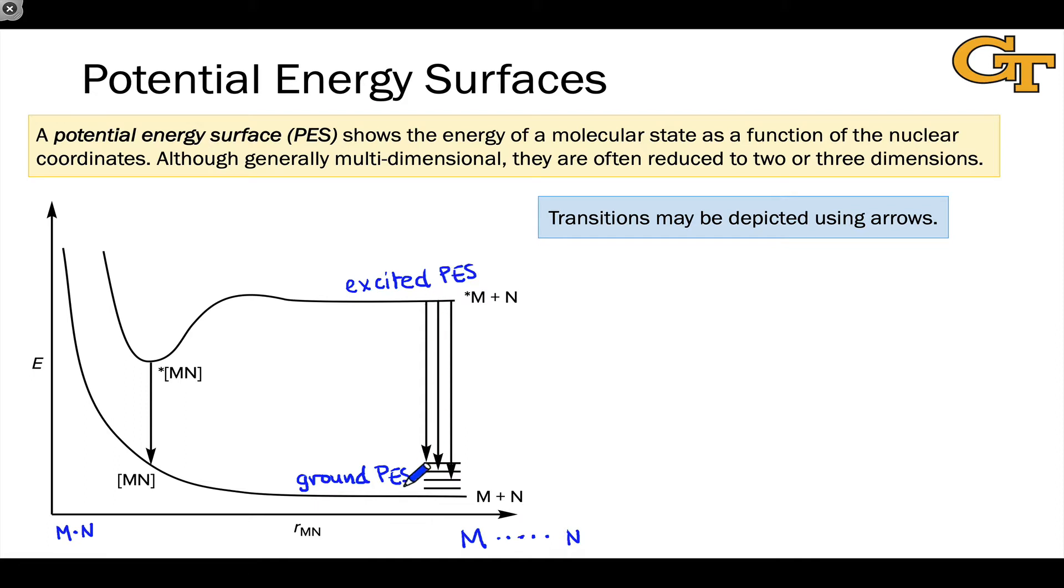And we can show transitions between the excited and ground potential energy surfaces using arrows, for example. Now, an important point is the energy that's plotted is the electronic energy. At a given value of RMN, the nuclear coordinates are the same. And so what we're seeing is the effect that a change in electron configuration or orbital shape or orbital energy makes on the energy of the state.